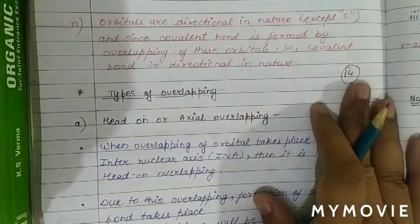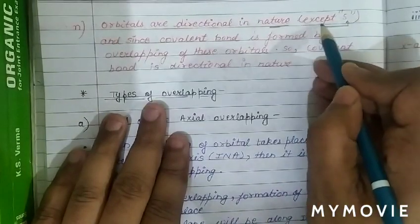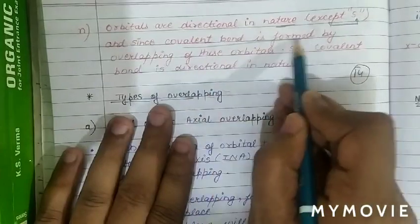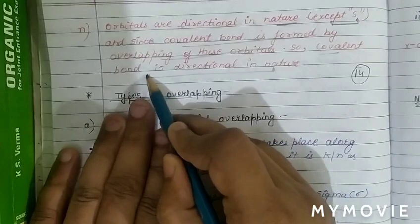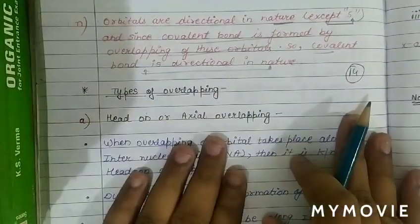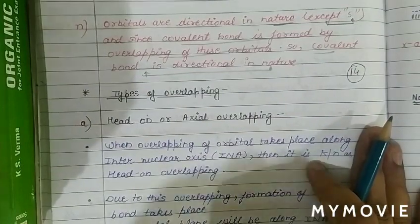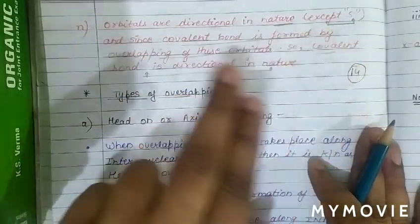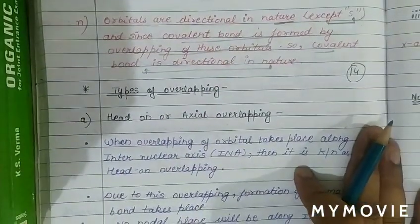Since orbitals are directional in nature (except s orbital which is non-directional), and covalent bonds form by overlapping of these orbitals, covalent bonds are directional in nature. Ionic bonds, by contrast, are non-directional in nature.